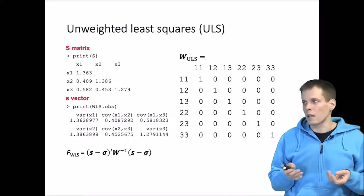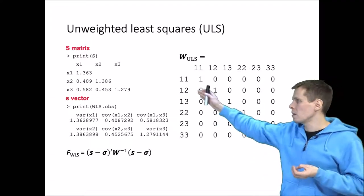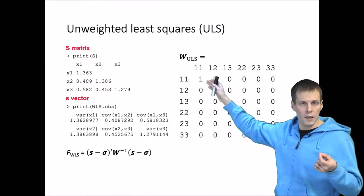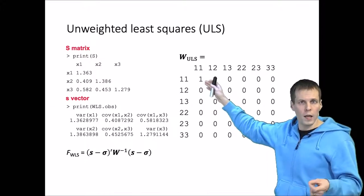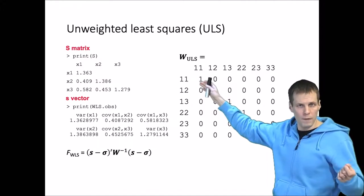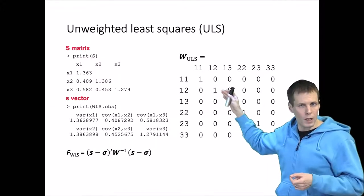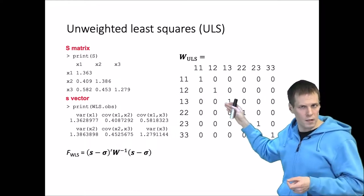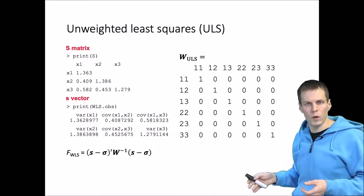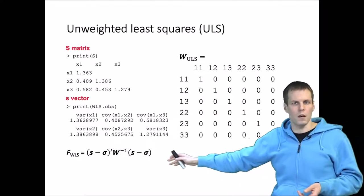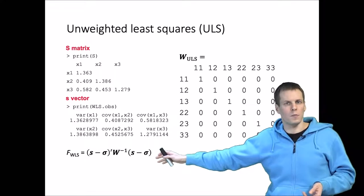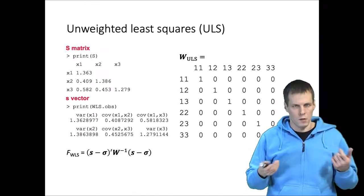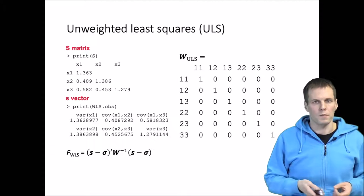The ULS estimator is not particularly useful but it is easy for teaching purposes to start with. The idea of ULS is that we simply take each difference, weight each difference equally, multiply each difference with itself, square them, and take a sum. That's the unweighted least squares estimator.